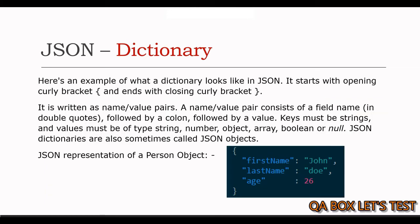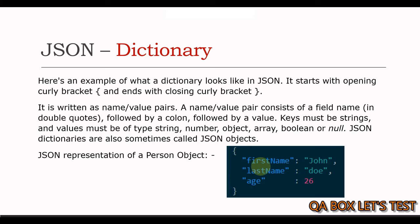The outermost level of a JSON document is either an object, also known as a dictionary, which is signified by curly braces, or an array, also known as a list, which is signified by square brackets. Based on that, we say whether a given JSON document is a dictionary or a list. Here is an example of what a dictionary looks like in JSON — it starts with the opening curly bracket and ends with the closing curly bracket.